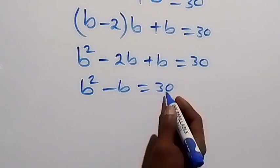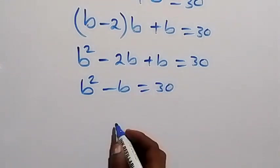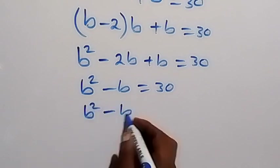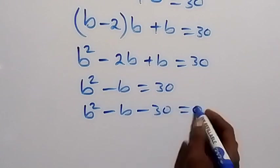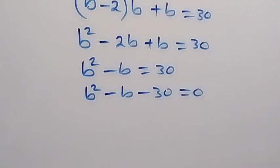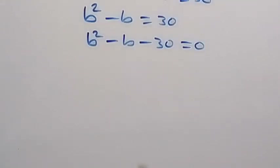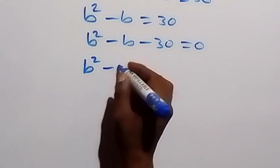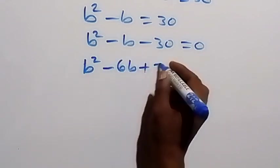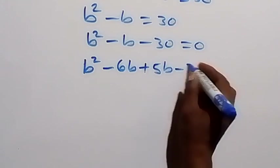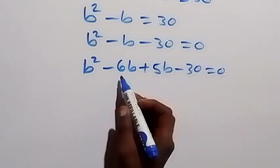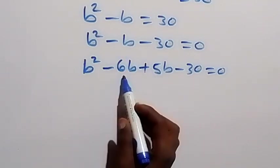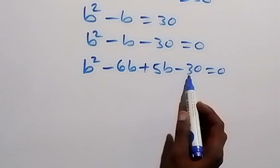Then, bring 30 here, become minus 30. And we have B squared minus B minus 30 equals to 0. This forms a quadratic equation that we can factorize. And also, when we multiply it, we get minus 30.